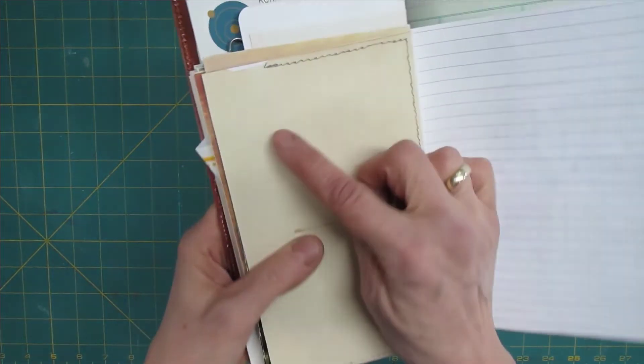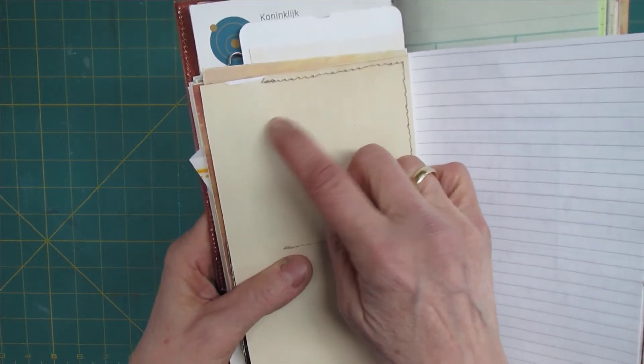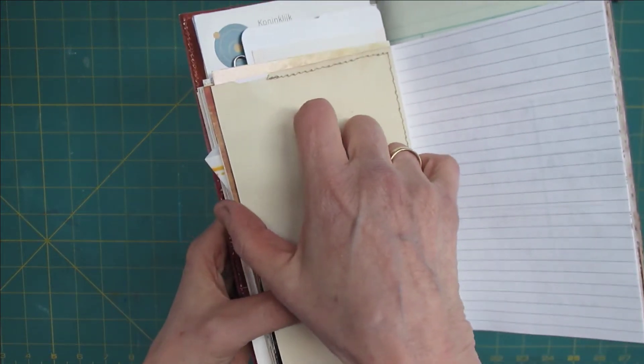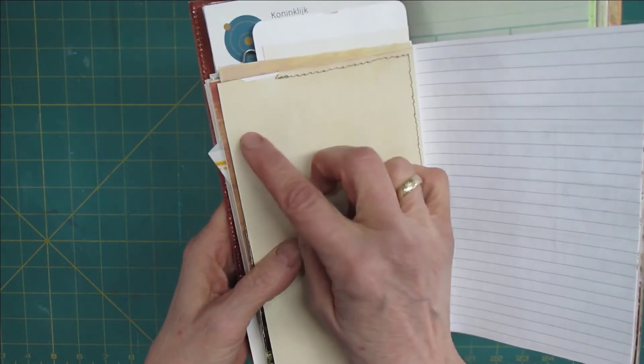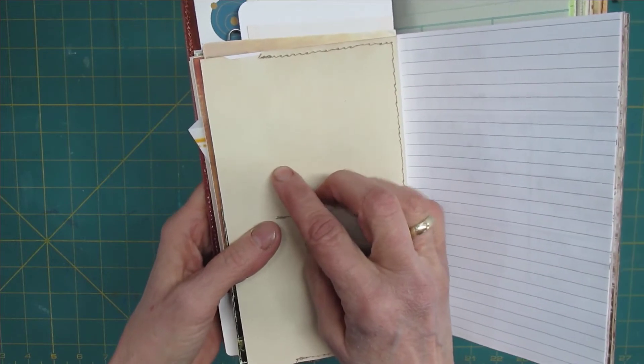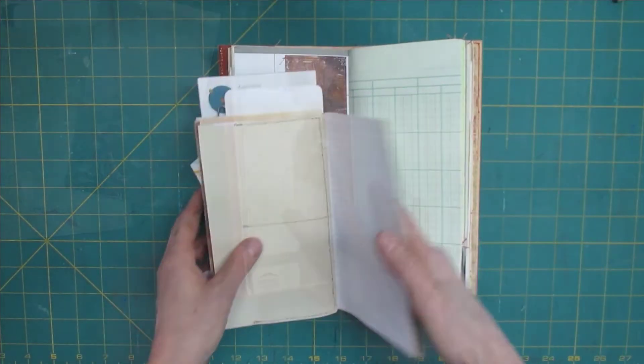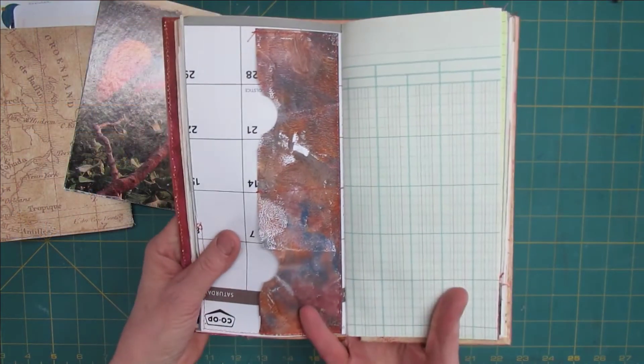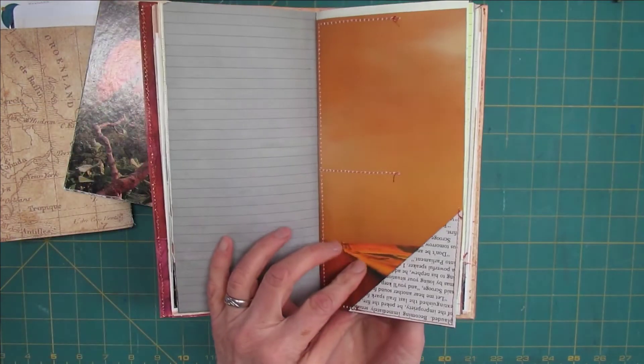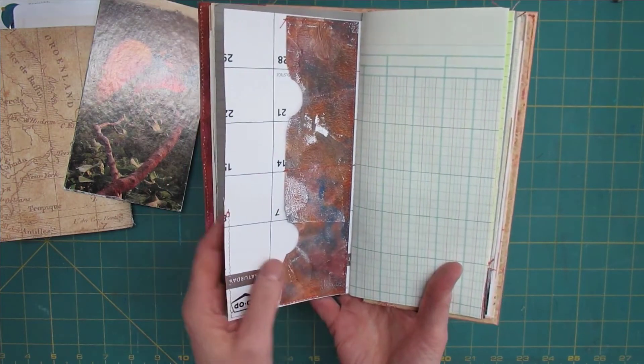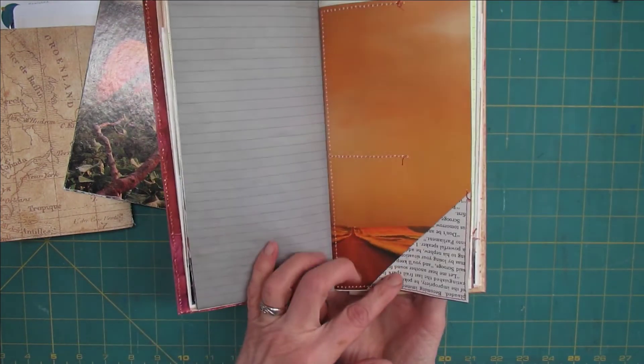Now if I would write here, I would come across the bump that the pocket makes on that side over here. So that's not very convenient to write on. Now what I do when I make a journal, I make sure that the pockets are on one page, as in one paper. So there's a pocket here and there's a pocket here.